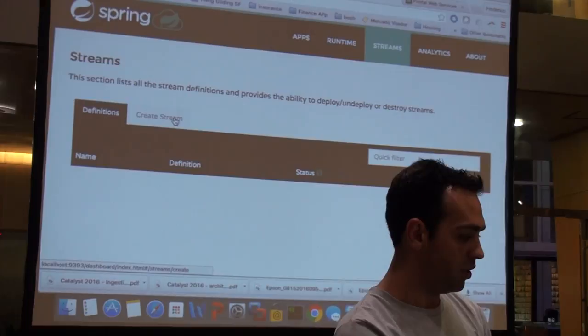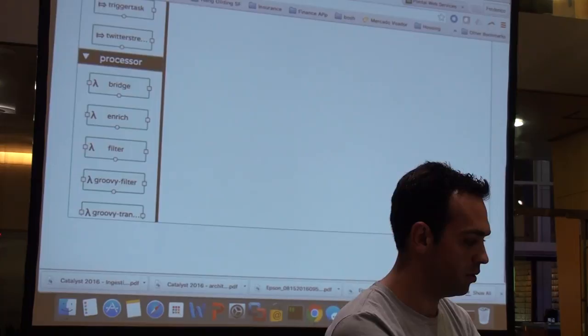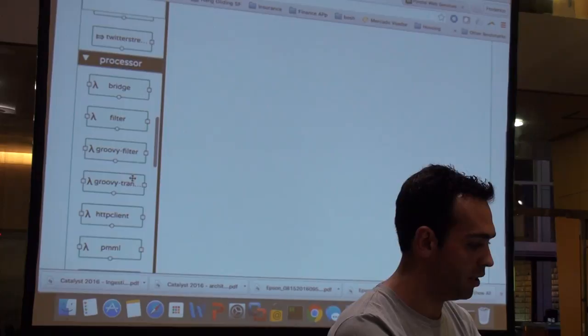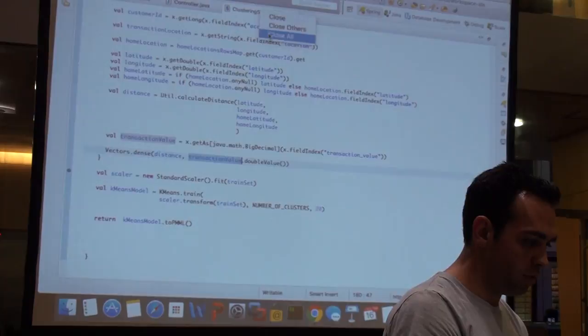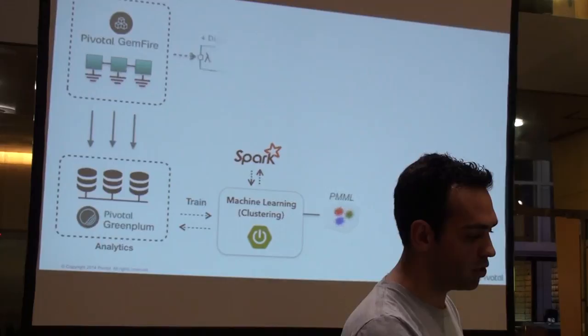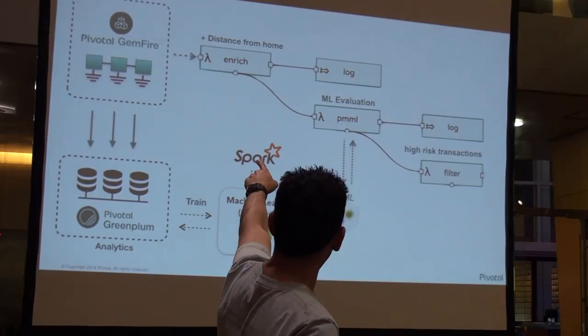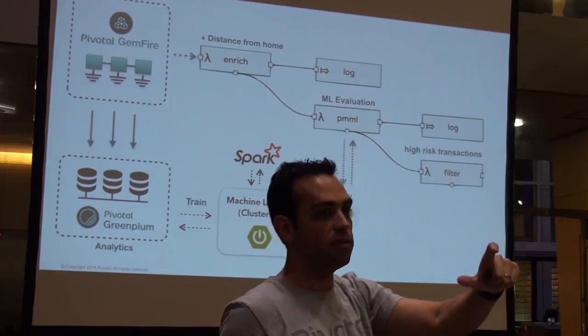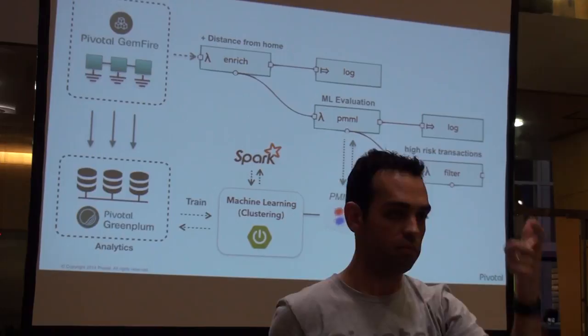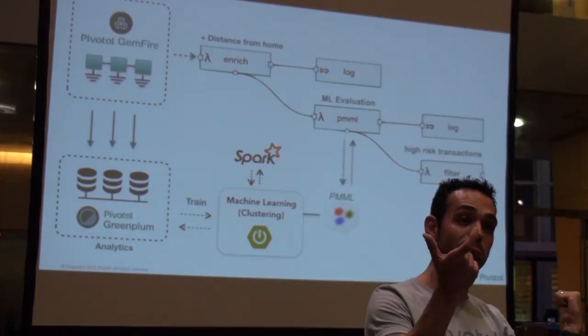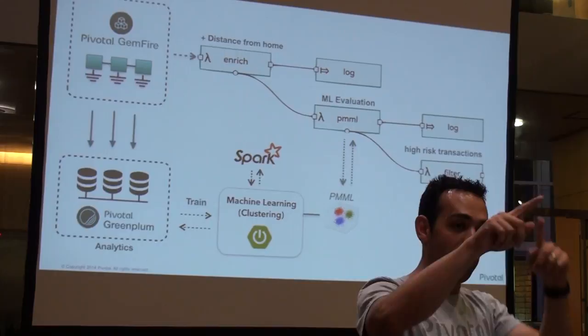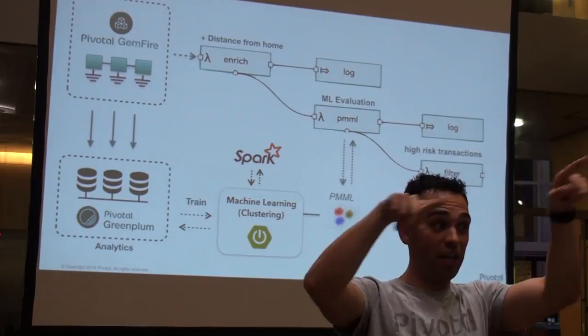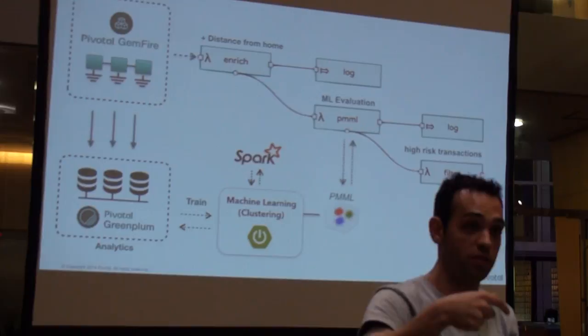Now the 'enrich' processor is gone. To recap: the first step of the stream, after training the model and outputting the PMML, was taking information right out of Gemfire and adding a distance-from-home-location variable to it. That distance from home location was stored in Redis during the training phase. This is an example of two microservices sharing a Redis database for shared context — otherwise I'd need to compute it again, which is extra time I don't want.